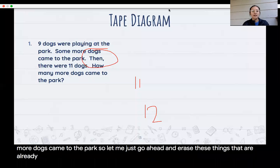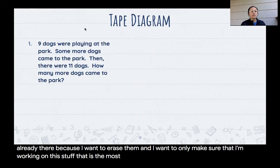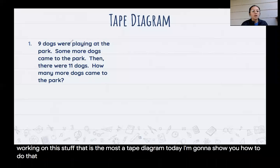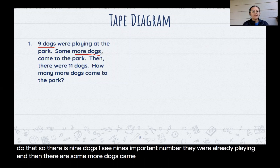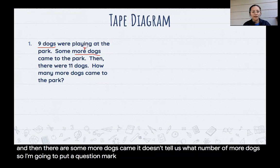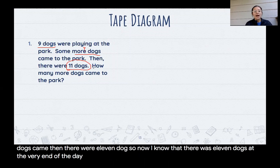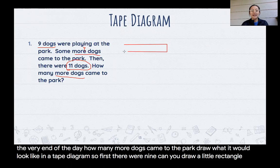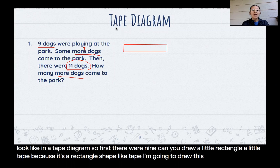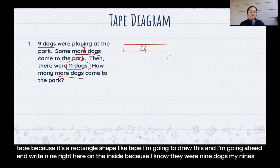So let me just go ahead and erase these things that are already there because I want to only make sure that I'm working on the stuff that is the most helpful for me. So I'm going to make a tape diagram today. There was nine dogs. I see nine is an important number. And then some more dogs came. It doesn't tell us what number of more dogs. So I'm going to put a question mark right here because I don't know how many more dogs came. Then there were 11 dogs. So now I know that there was 11 dogs at the very end. I'm going to draw a little rectangle, a little tape because it's a rectangle shape like tape. I'm going to write nine right here on the inside because I know there were nine dogs.